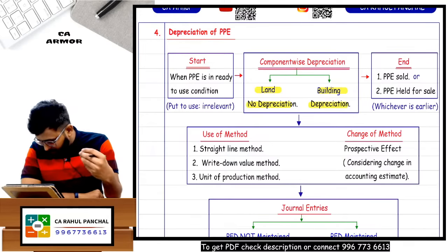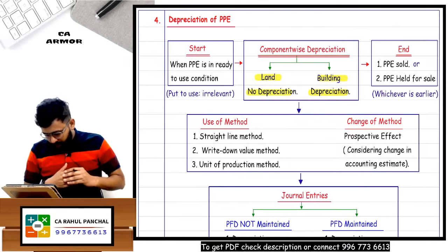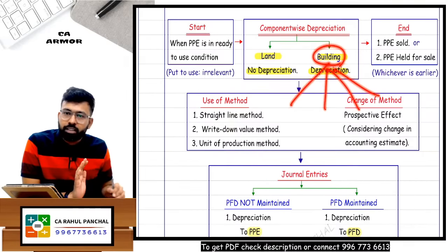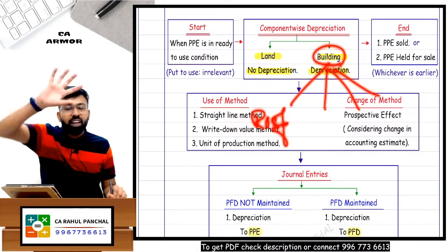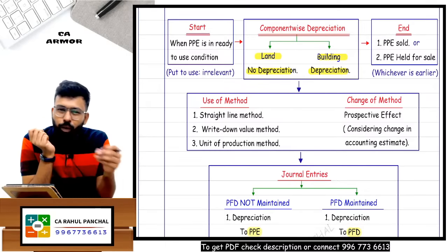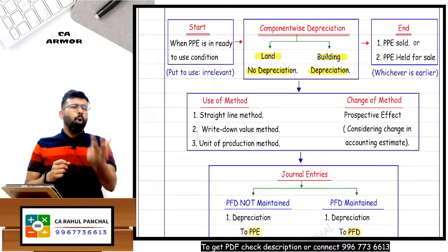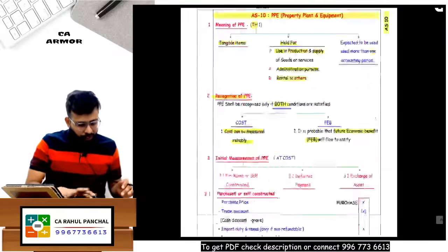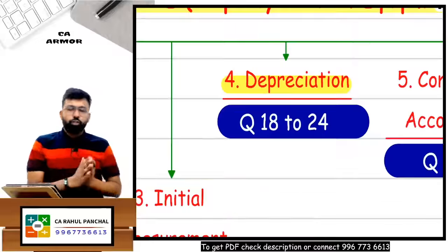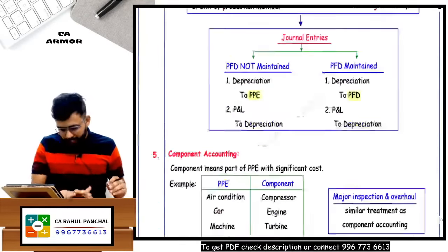In income tax, depreciation is based on put-to-use. But in AS10, it's ready-to-use. Even within a building, you can divide into parts - if the roof has a different life, different depreciation applies. Let's do Question 18 to get more clarity on component-wise depreciation. Depreciation questions start from question number 18.